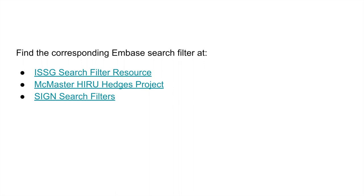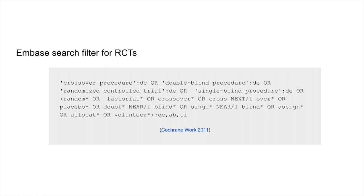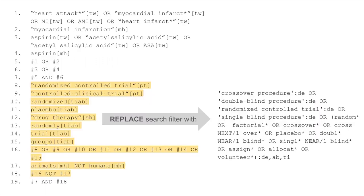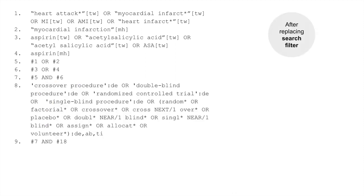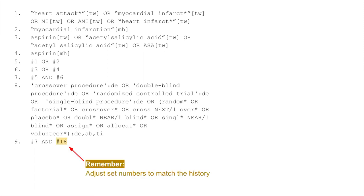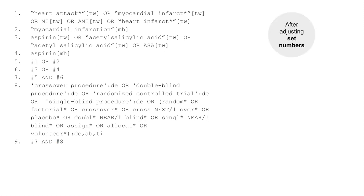To find the corresponding Embase search filter, refer to organizations like these. This is the Embase search filter for randomized controlled trials that I found. Let's replace the PubMed search filter with this Embase version. Here's our strategy after replacing the search filter. Remember to adjust set numbers so that search combinations match the history accurately. Here's our strategy after adjusting the incorrect set number.